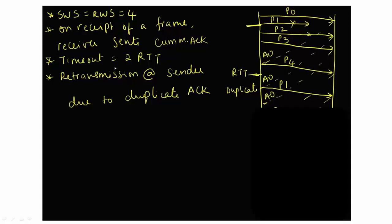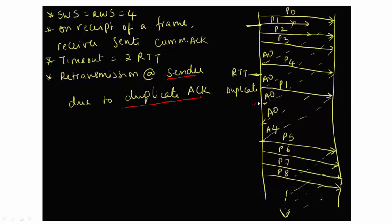Here it's the same example as before, but now the retransmission can be due to a duplicate acknowledgement. So this all stays the same, but here as soon as I got a duplicate acknowledgement, I'm going to retransmit P1. I did not wait for a timeout.